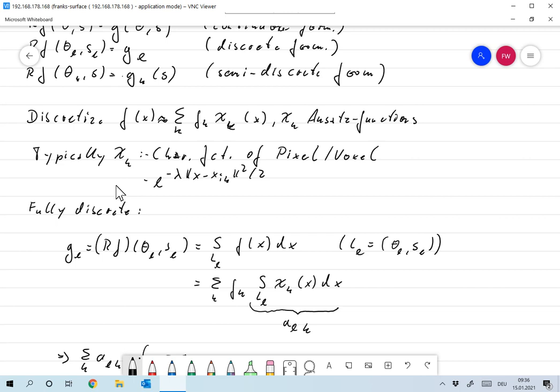But that sometimes gives discontinuous images. So sometimes you would like things to be very smooth. So a common choice might also be something like e to the minus lambda norm of X minus ξ_K squared over 2,